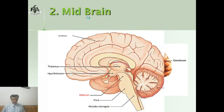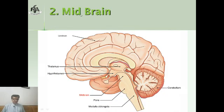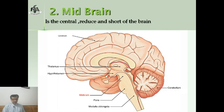Now we come to the midbrain, the second part of the brain. Midbrain is a very reduced and short part of the brain — you can see it here with red labeling. Midbrain conducts messages from the hindbrain to the forebrain, so it is a very reduced part of the brain.